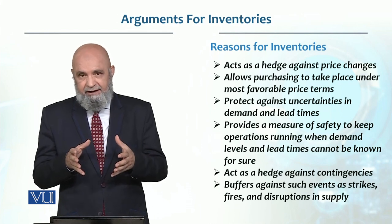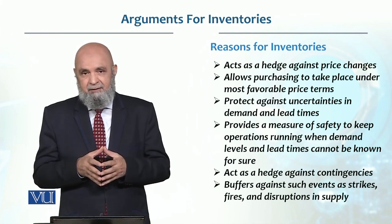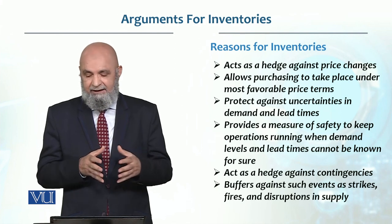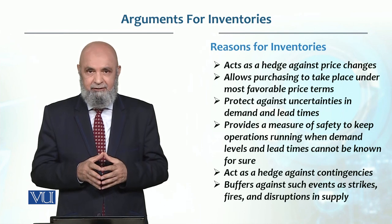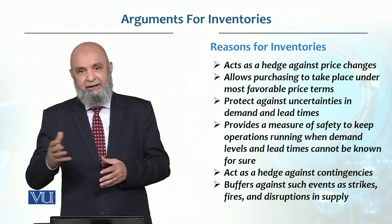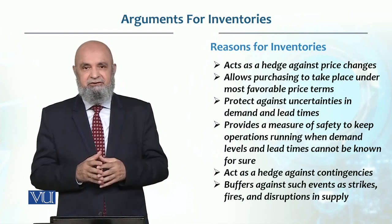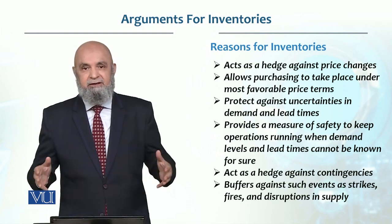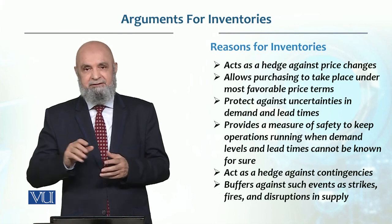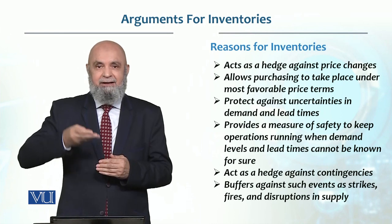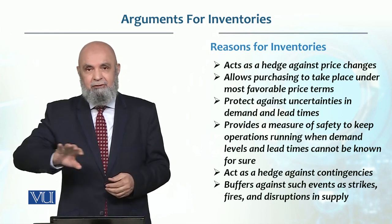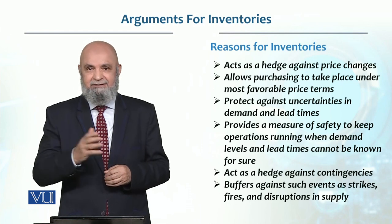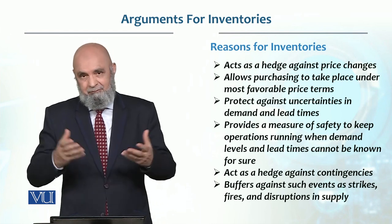When we anticipate that product prices will go up, we hedge against that by keeping a large inventory. For example, China did this when oil prices dropped extremely low — even going negative. China used all its available storage capacity to stock up on oil, expecting that prices would rise later. And that is exactly what happened. So to hedge against price hikes, we build inventory.